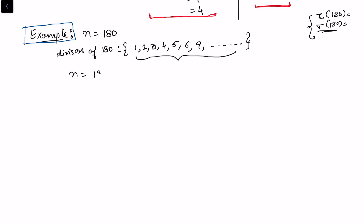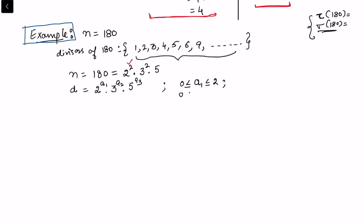To find the formula for tau and sigma for a general n, write n as its prime factorization. For n = 180 = 2² × 3² × 5. Any divisor d must also share the same prime factorization form: d = 2^a1 × 3^a2 × 5^a3, where 0 ≤ a1 ≤ 2, 0 ≤ a2 ≤ 2, and 0 ≤ a3 ≤ 1.